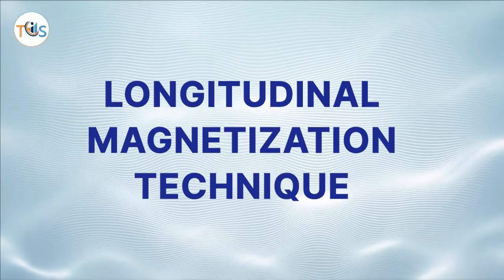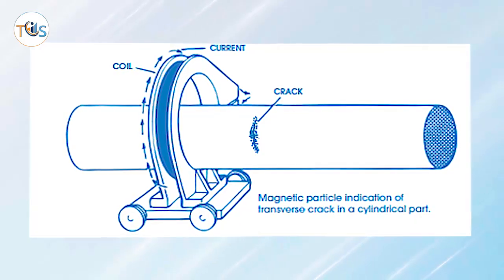Longitudinal Magnetization Technique. The longitudinal magnetic field cutting across the crack attracts and holds iron powder to indicate the crack. Electric current is passed around the part parallel to the defects to be found.